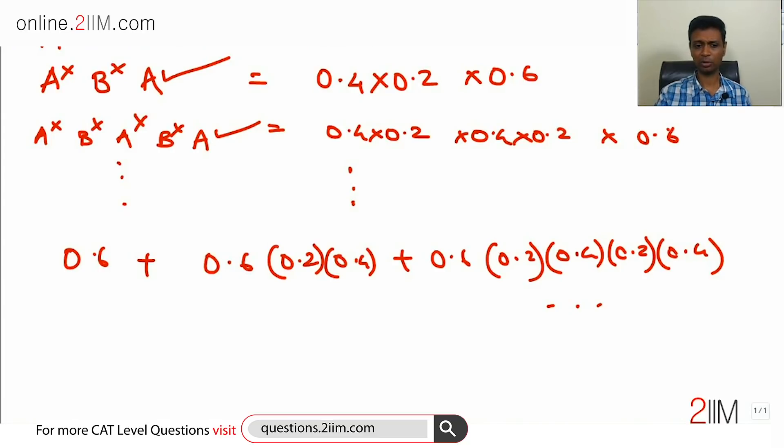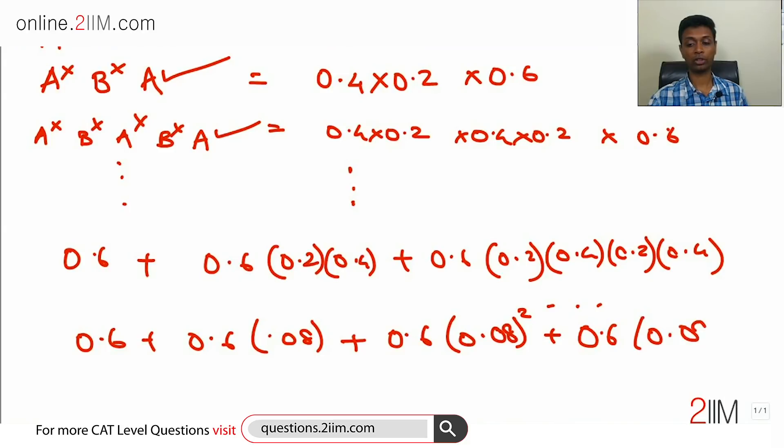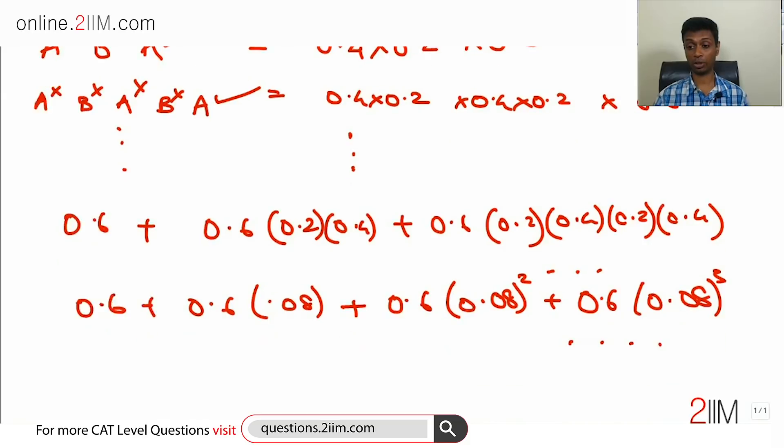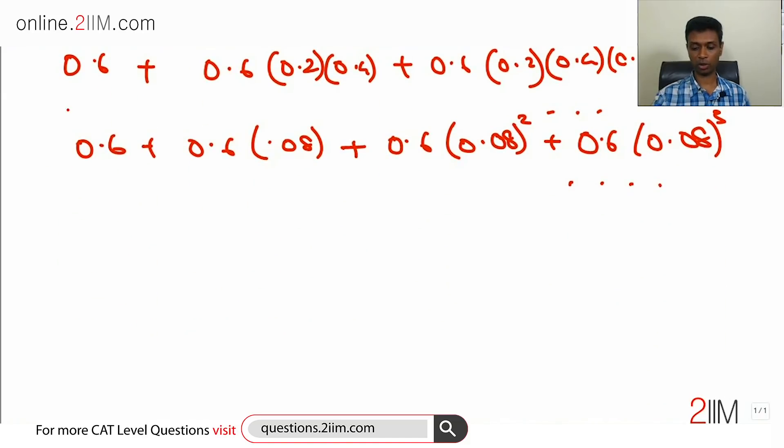Get that and you're through: nothing but 0.6 + 0.6 × 0.08 + 0.6 × 0.08³ and so on. Think about this - this is a geometric progression with first term 0.6, common ratio 0.08, and we want to find the sum to infinite number of terms.